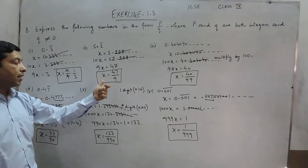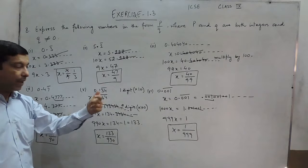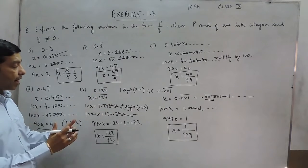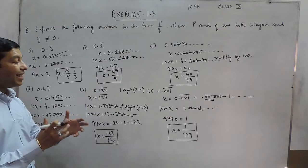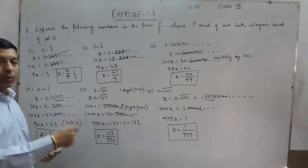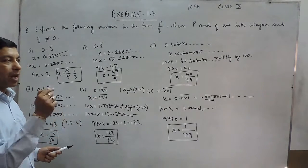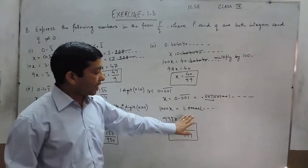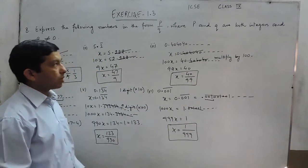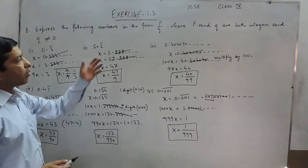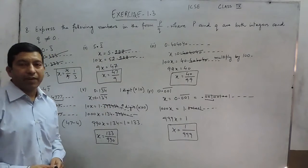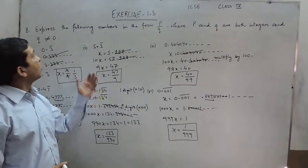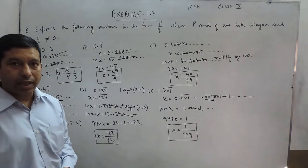So this way we can solve the values of p and q. First of all we have to take the digits which are not repeating before the decimal place, and then look for how many digits are repeating — either 1, 2, or 3. If it is 1 digit multiply by 10, if there are 2 digits multiply by 100, if there are 3 digits multiply by 1000, and this way we can write it in the form of p and q. If you have any problem you can email or contact us, and further we will go to question number 9 onwards. Thank you.